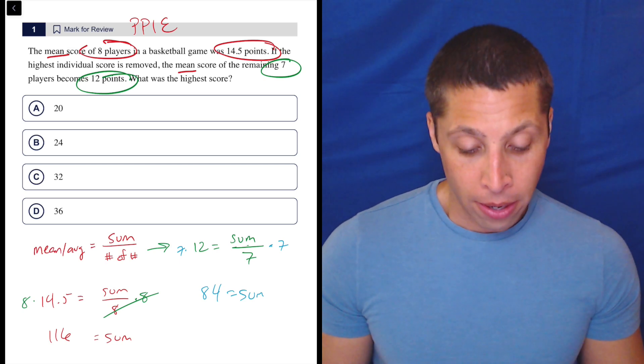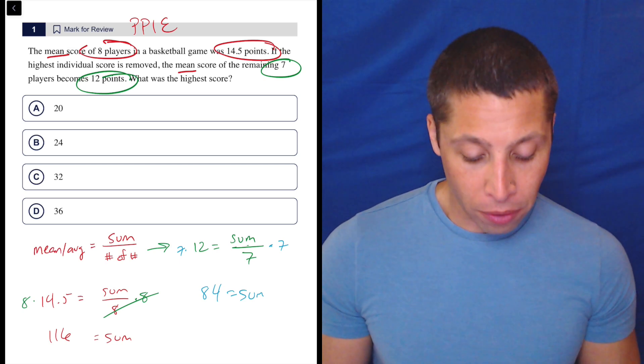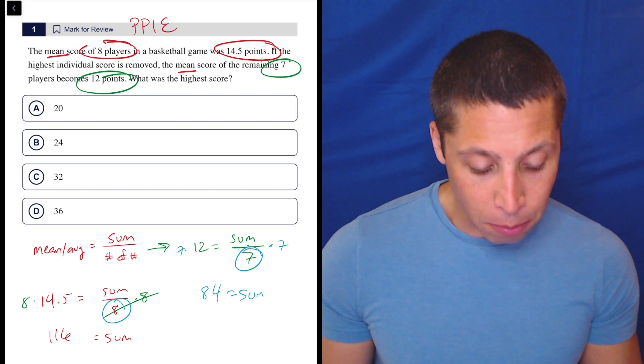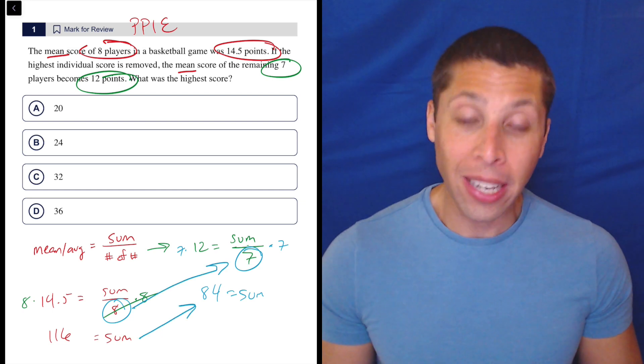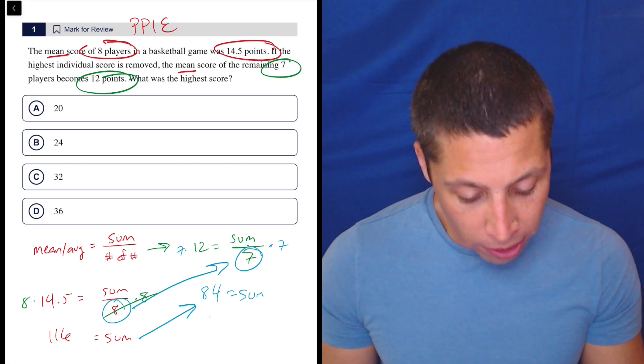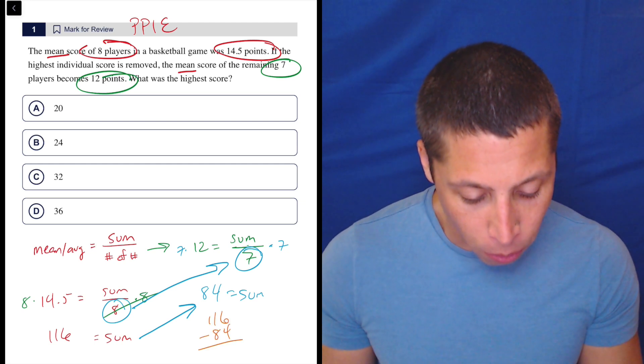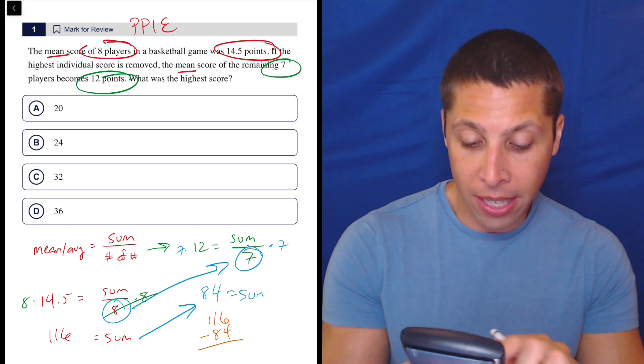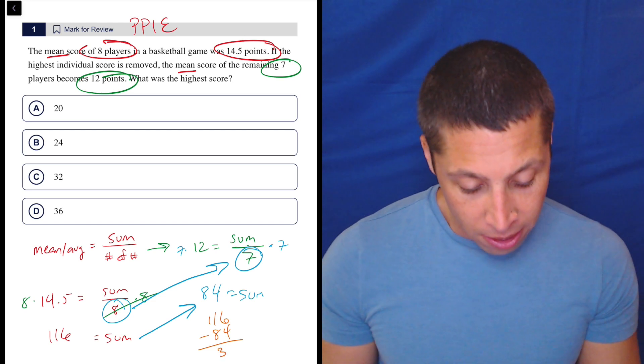So now what? Well, a score was removed. We went from eight players to seven players. And in so doing, we lost however many points this is. So why don't we just do some basic subtraction here? What is 116 minus 84? 116 minus 84 is 32.